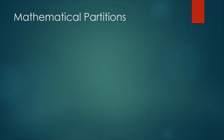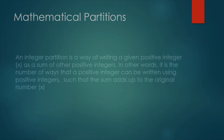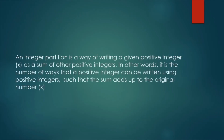Welcome to a video about mathematical partitions — not partitions like in your hard drive, but partitions pertaining to numbers specifically. The definition of mathematical partitions goes as follows: an integer partition is a way of writing a given positive integer x as the sum of other positive integers. In other words, it is the number of ways that a positive integer can be written using positive integers such that the sum adds up to the original number x.